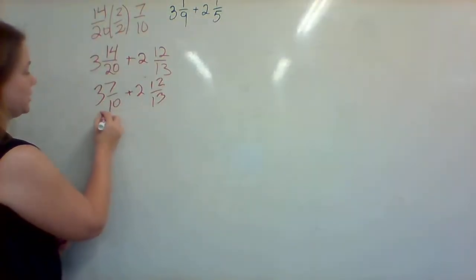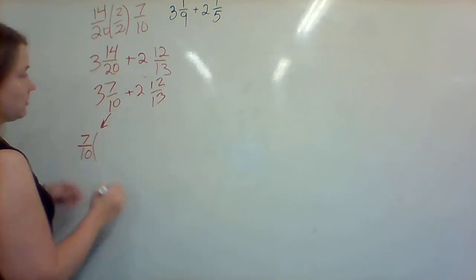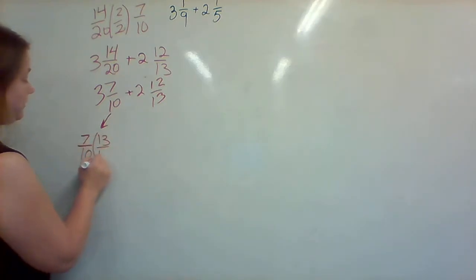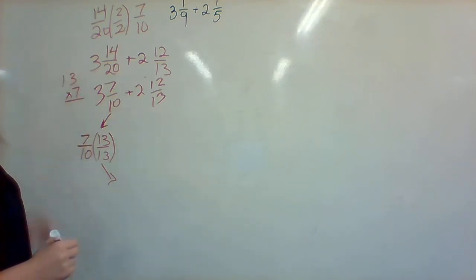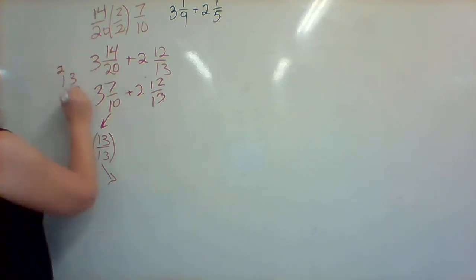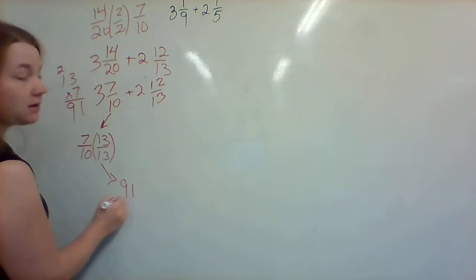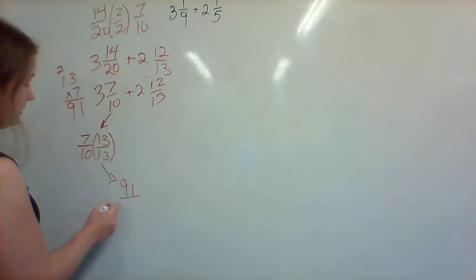The first thing I'm going to do is take out the 7 tenths and multiply it using the other denominator by 13 over 13. Now, 7 times 13, well I don't know that one off the top of my head. So 7 times 3 is 21, 7 times 1 is 7 plus 2 is 9, so I have a 91 on top. And 10 times 13, well I know that multiplying by 10 just adds 0, is 130.